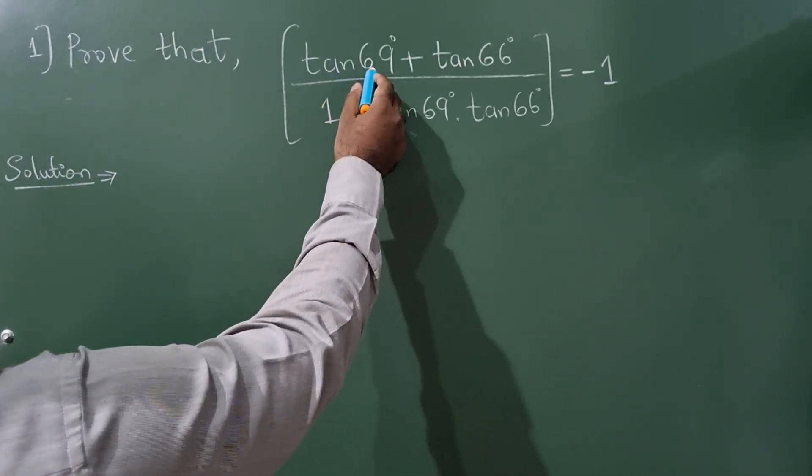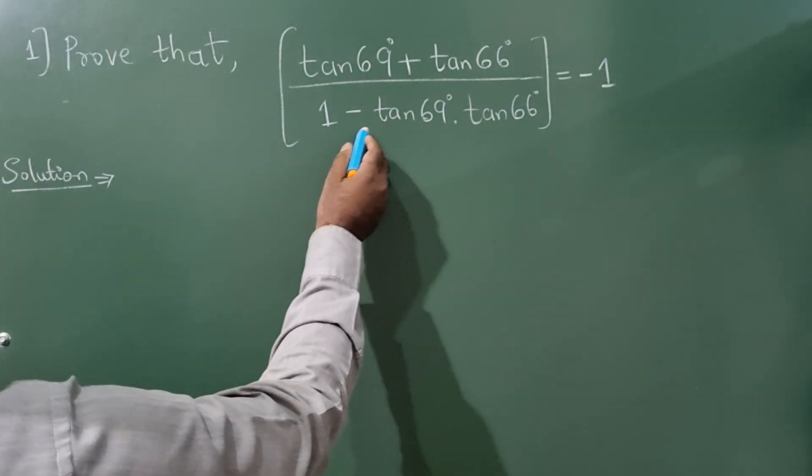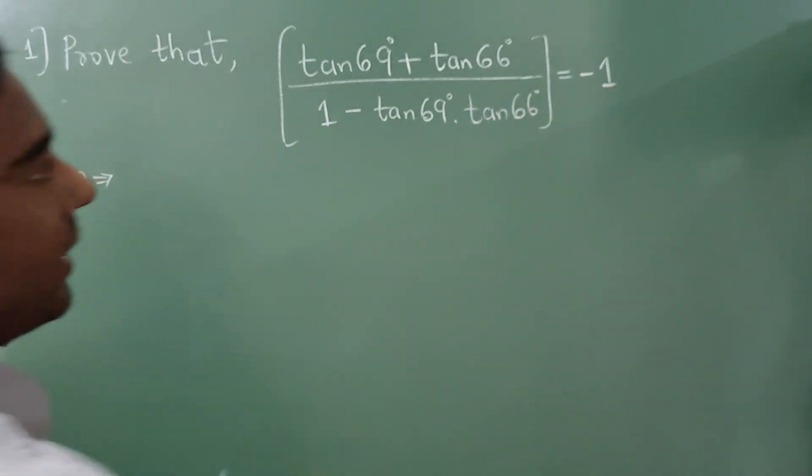Prove that tan 69° plus tan 66° divided by 1 minus tan 69° into tan 66° is equal to minus 1.